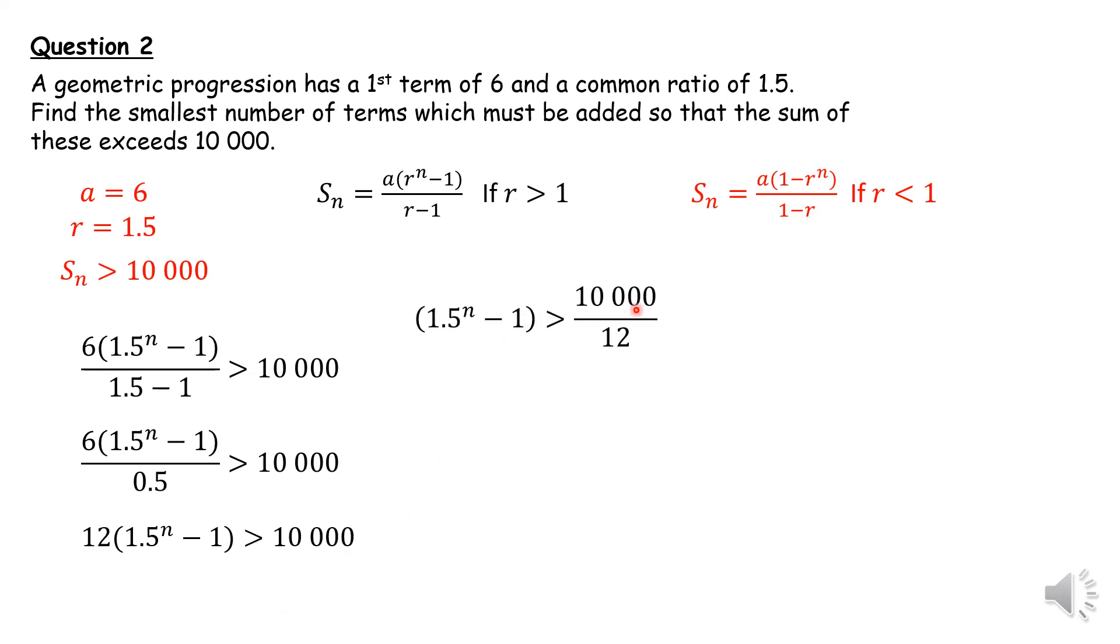I divide that 12 into the 10,000, and I'm going to clean that up. That gives me 2,500 over 3. If I add that minus 1 to both sides, I get 2,503 over 3.